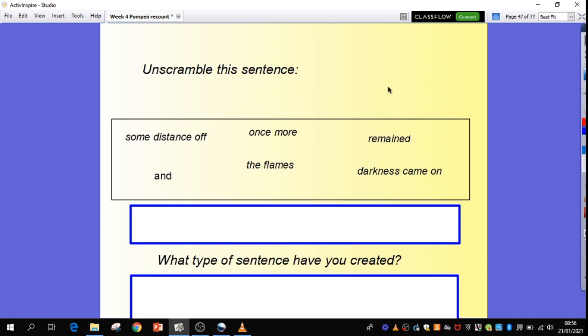So Year 6, I have given you a sentence to unscramble. It came in your pack yesterday. So here you have some words. You can, if you want to, do like we do in class and cut up the actual phrases that you've got and manipulate them around on the table to create a sentence. However, if you just want to do it on the screen and write the sentence on a piece of paper that's fine by me. But remember, you cannot split up darkness came on. That is a phrase that all goes together within the sentence. So take some time, have a go at that.